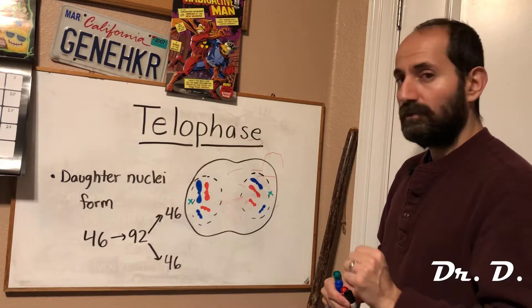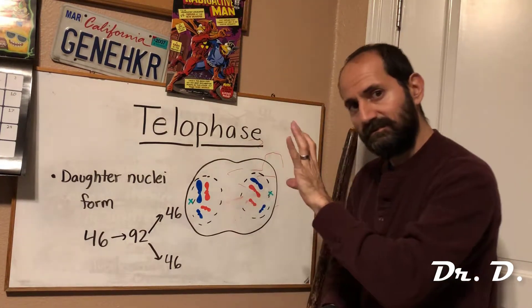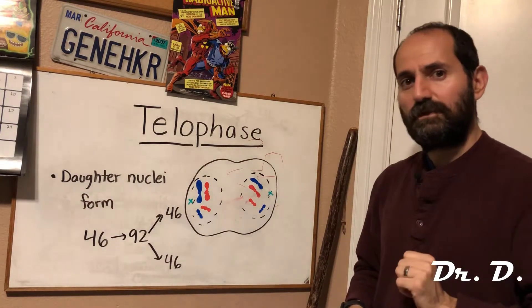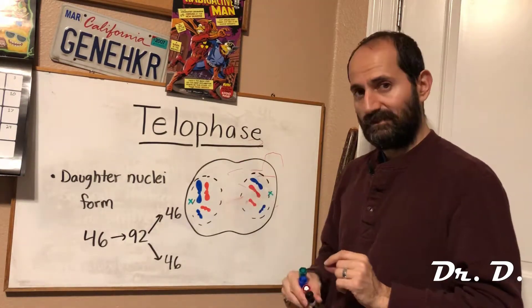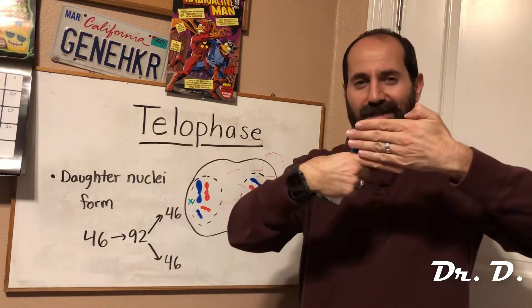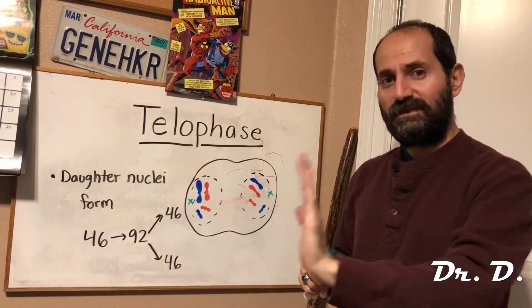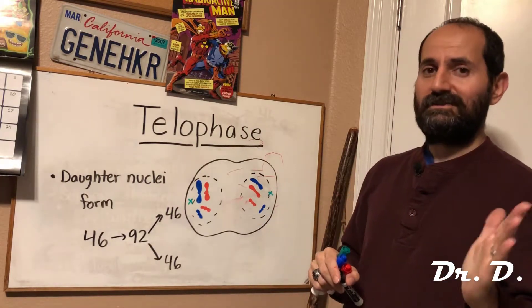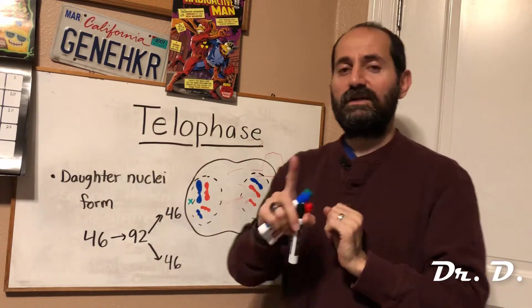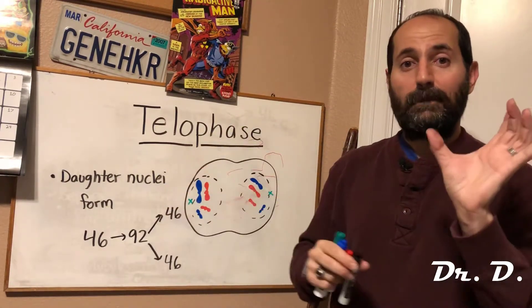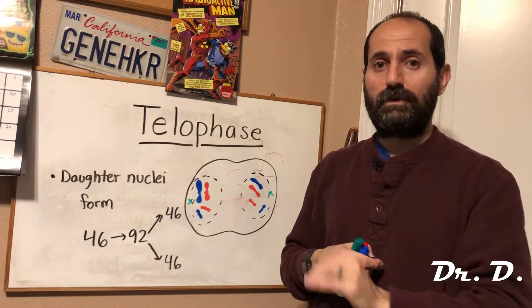Notice how cytokinesis has already started here — the cell has started to pinch with a cleavage furrow formation. What you should realize is that cytokinesis is not part of telophase, but it is concurrent, meaning it can happen at about the same time. Before telophase is finished, oftentimes cytokinesis has begun. But cytokinesis is not part of mitosis — it's its own thing. Mitosis and cytokinesis together are called M phase, or mitotic phase.